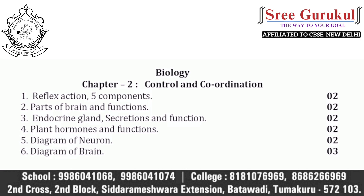From Control and Coordination, expected questions are: what is a synapse, and draw a neat labeled diagram of a neuron for two marks. Study reflex action and reflex arc and the five components of the reflex arc. The diagram of the brain is very important for three marks — along with parts of the brain and their functions. Also study different tropic movements in plants — hydrotropism, geotropism, phototropism, chemotropism — plant hormones including growth promoters and inhibitors, and the endocrine system with all glands, their secretions and functions.